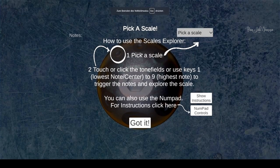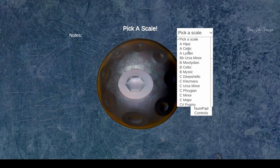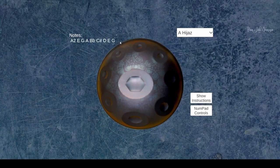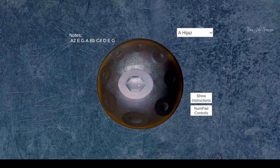So it's very easy to use. Step one: pick a scale and then just click on the tone fields and start exploring the scale. You can see the notes of the scale right here.